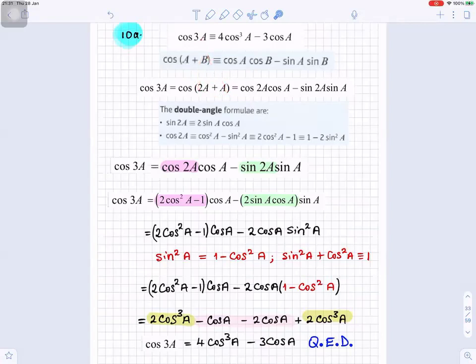And now, using that, it becomes cos2a cosa minus sin2a sina. Now, we can change cos2a into 2 cos²a minus 1, and the cosa stays the same. We can change sin2a to 2 sina cosa, and the sina at the end stays the same.